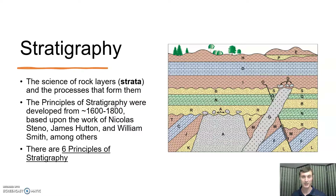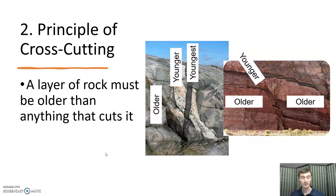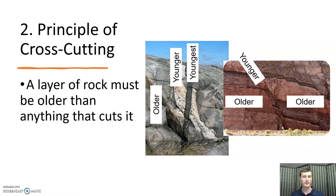We're going to look at six main principles of stratigraphy. Principle number one is superposition: older rocks are on the bottom and younger rocks are on top. Next is the principle of cross-cutting: a layer of rock must be older than anything which cuts through it. For example, a fault that cuts surrounding rock must be younger than that rock. Similarly, if a lava tube cuts across everything else geometrically, it must be the youngest feature.